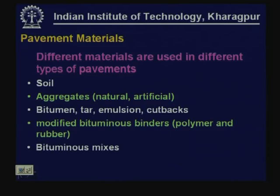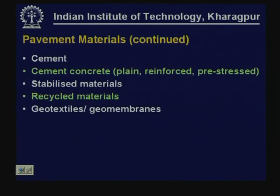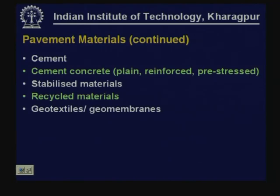We have bituminous mixes which are a combination of different types and sizes of aggregate and bitumen or different types of bituminous binders. We also use cement, and cement concrete of different types — plain, reinforced, pre-stressed cement concrete. We occasionally use stabilized materials, especially for subbase and base, and even subgrade can be stabilized. We also use recycled materials; existing pavement materials can be recycled and reused with certain modifications — both bituminous materials and concrete pavement — recycled at the same place or milled, removed and reused elsewhere.